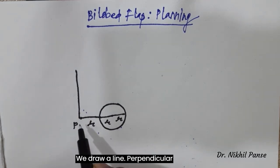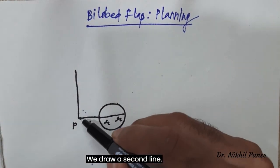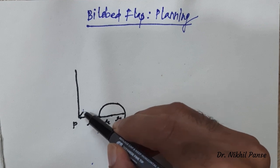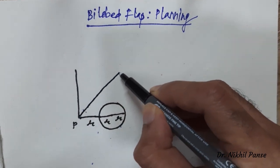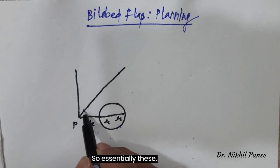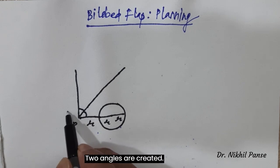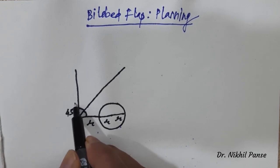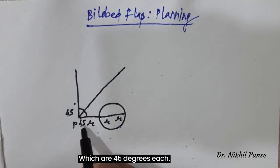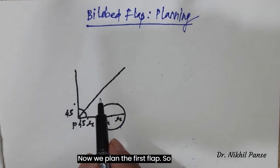We draw a line perpendicular to the pivot point. To this line we draw a second line which is at 45 degrees. So essentially these two angles are created which are 45 degrees each. Now we plan the first flap.